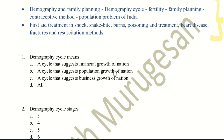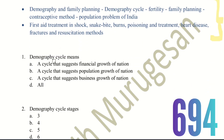Let's begin with the first question. Demography cycle means — the choices are: a cycle that suggests financial growth of a nation, a cycle that suggests population growth of a nation, or a cycle that suggests business growth of a nation. Demography cycle means population growth.